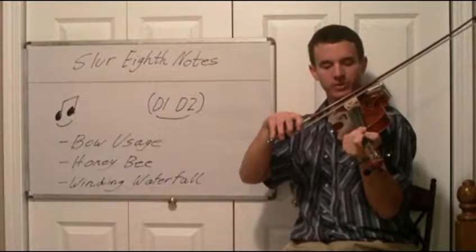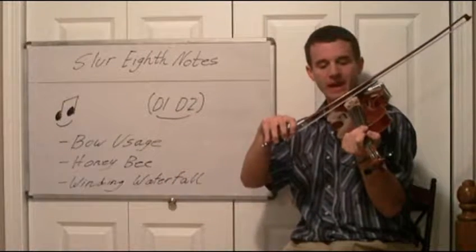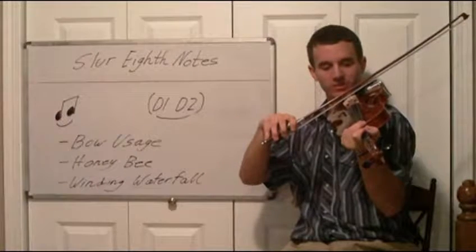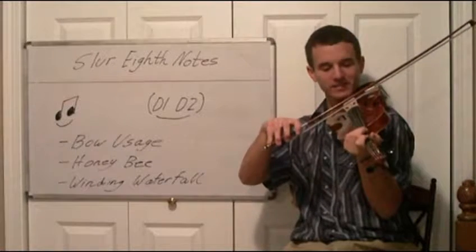Now when we slur eighth notes we don't want to use the whole bow. We want to use just about half of the bow because they're quicker notes.